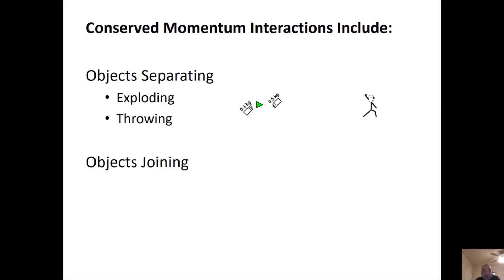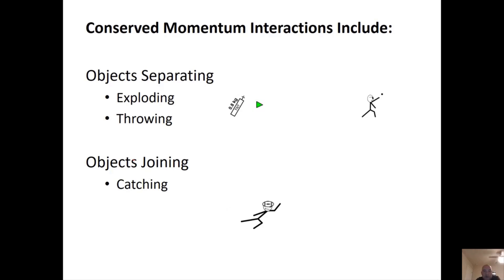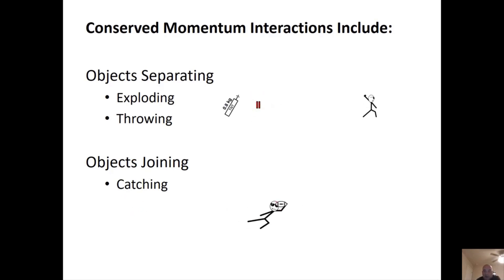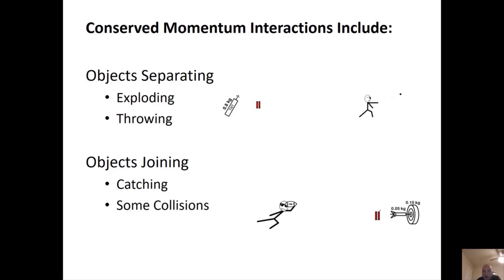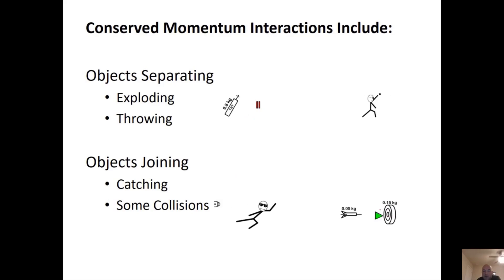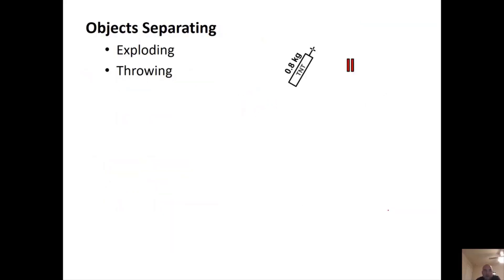We're also going to look at scenarios where objects are joining. If you catch a football, you'll catch it and both travel with a new combined velocity — you were initially traveling with a separate velocity and afterwards you're traveling together. Or a dart hitting a dartboard: each is separate with its own velocity, the dartboard wasn't moving, the dart was. They hit, and after they hit you have a combined object moving with a single velocity.